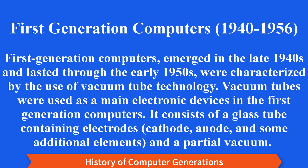First generation computers, 1940–1956. First generation computers emerged in the late 1940s and lasted through the early 1950s, and were characterized by the use of vacuum tube technology. Vacuum tubes were used as the main electronic devices in first generation computers. A vacuum tube consists of a glass tube containing electrodes — cathode, anode, and some additional elements — in a partial vacuum.